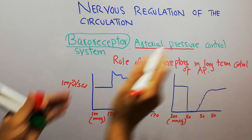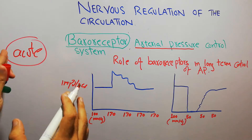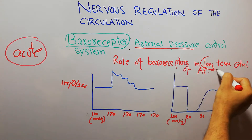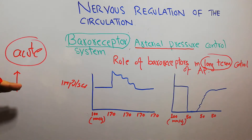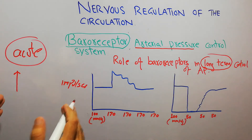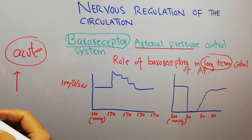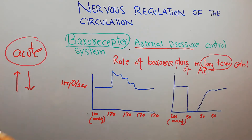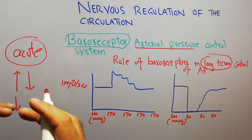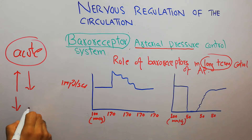They try to regulate the arterial pressure, but the effect is more in acute control. In the acute control of the arterial pressure, whenever the arterial pressure increases, the baroreceptor gets stretched and sends signals to the tractus solitarius in the brain, and then the brain decreases vasoconstriction and decreases the heart rate, which brings down the arterial pressure. Similarly, when the arterial pressure falls, the baroreceptor signals decrease, and then the brain increases vasoconstriction and heart rate, helping to increase the arterial pressure.